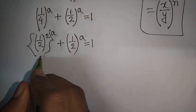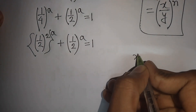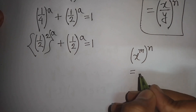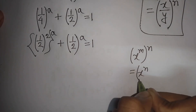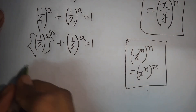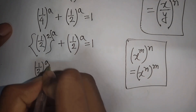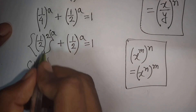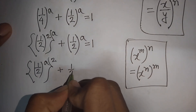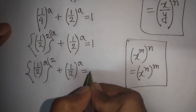We apply the rule that x power m, bracket to the power n, equals x power (m times n). So (1/2)^2 bracket to the power a becomes (1/2)^a bracket to the power 2, plus (1/2)^a equals 1.